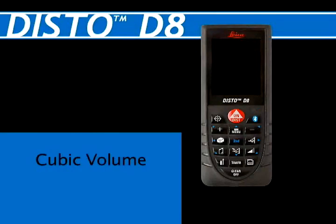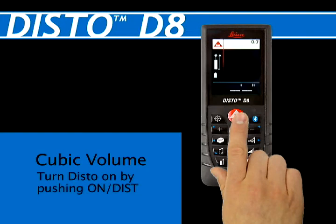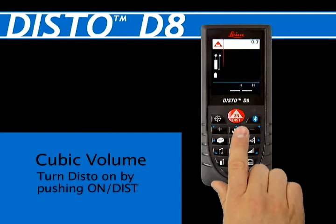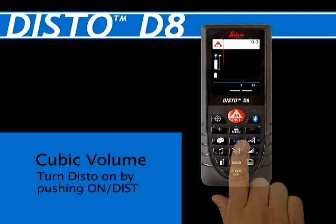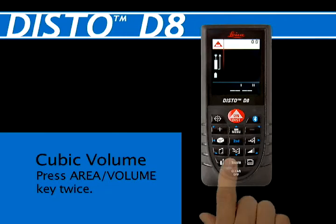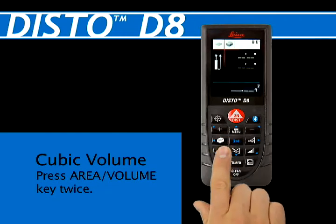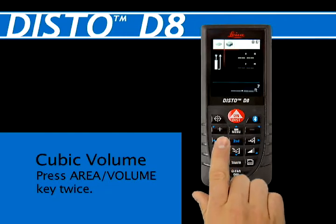Cubic volume. Three measures. Turn the Disto unit on by pushing the red button at top center of keypad. Press the area volume key twice — third button down on the left — to activate the volume feature.